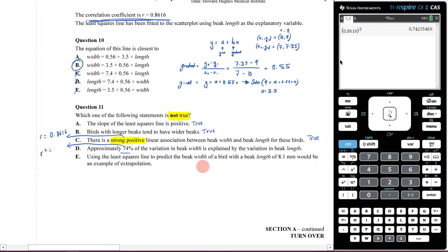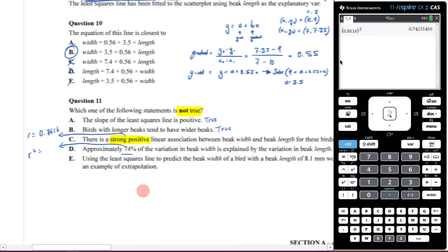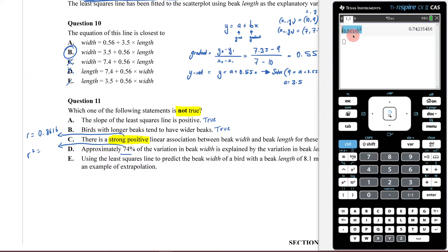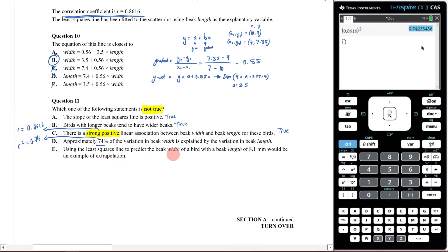To do that, you take 0.8616 - your r value - and square it. You end up with 0.74. Sure enough, 0.74 equals 74%, they're the same. So that means statement D is true.